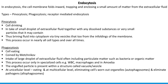Phagocytosis occurs only in certain specialized cells. In mammals, it commonly takes place through macrophages as well as various types of white blood corpuscles. In amoeba, this process is very common and leads to the formation of a contractile vacuole, with food vacuole formation being the result of the phagocytosis process.